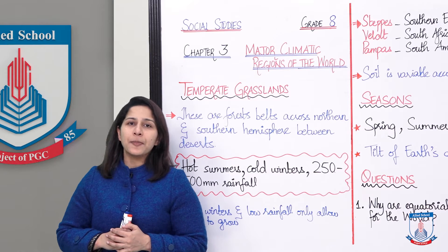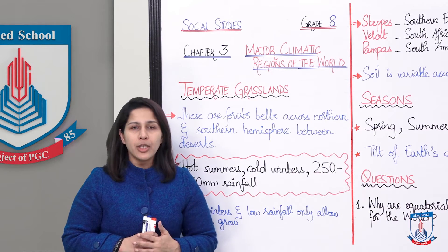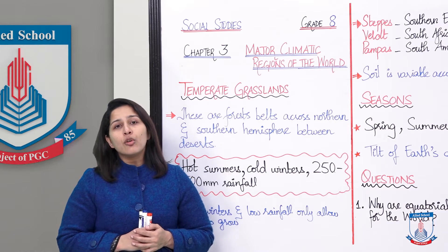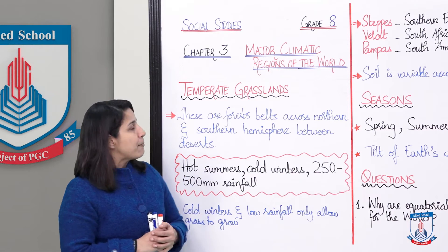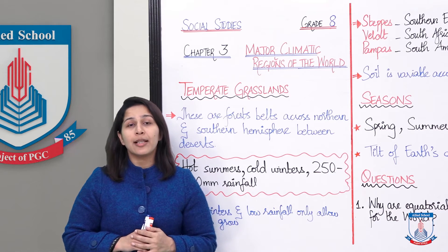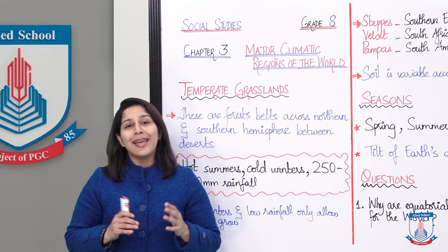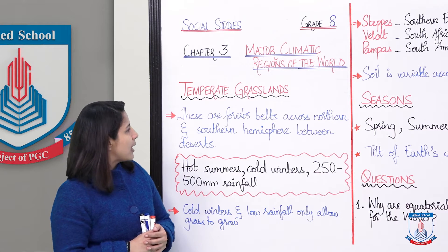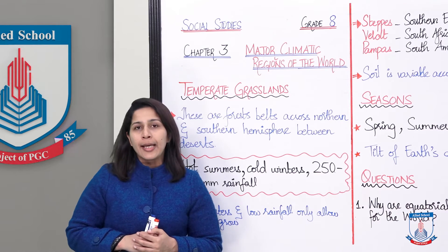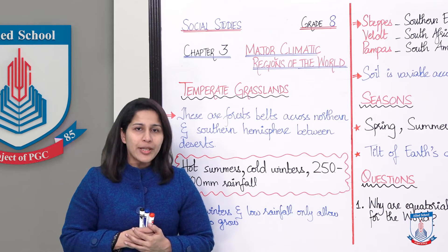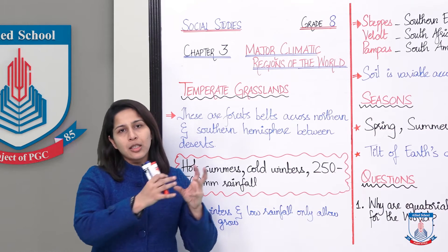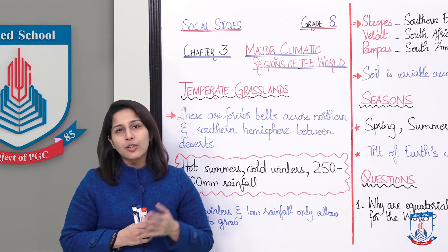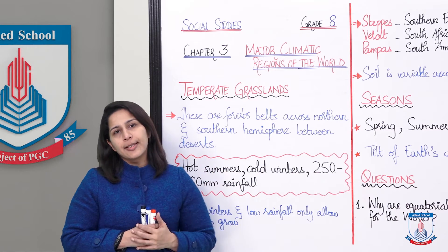In the earlier lecture, we discussed major climatic regions: monsoon climate, Mediterranean, equatorial, tundra — which had arctic and alpine. Now we are starting with temperate grasslands. As the name suggests, this climate is of grasslands — areas where only grasses grow. These are forest belts across the northern and southern hemisphere between the deserts, in both hemispheres, between tundra on one side and deserts on the other.